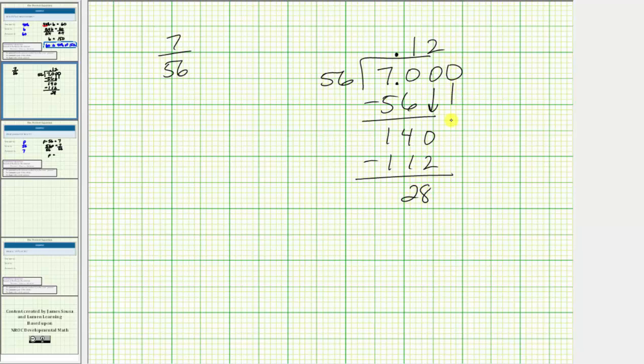Add another zero. Bring it down. And now determine how many 56 is in 280. There are exactly five 56's in 280. Five times 56 is exactly 280. Subtract. The difference is zero, so we're done.